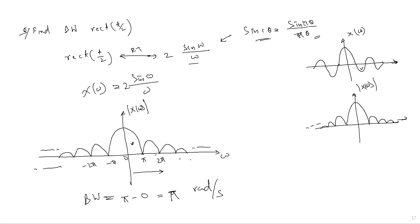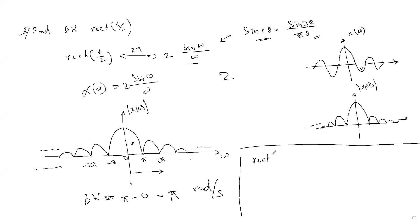The Fourier transform of rect(t/2) is 2·sin(ω)/ω. A student asks: if the Fourier transform of rect(t) is 2·sin(ω)/ω, then for rect(t/2), does ω become 1? Let me explain using the scaling property. We know that the Fourier transform of rect(t) is 2·sin(ω/2)/ω.